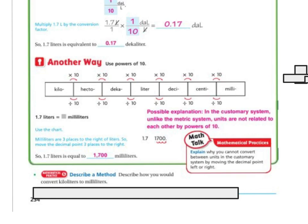Now, in this math talk, this one's kind of important. Why can you not convert between units in the customary system by moving the decimal point to the left or right? Well, that's because the customary system, unlike the metric system, the units aren't related to each other by powers of 10. So in the metric system, all I have to do is move the decimal over, because it's related by powers of 10. But things like cups to pints are not related by powers of 10. So that's why I have to do the conversion rate. I can't just move my decimal point over.